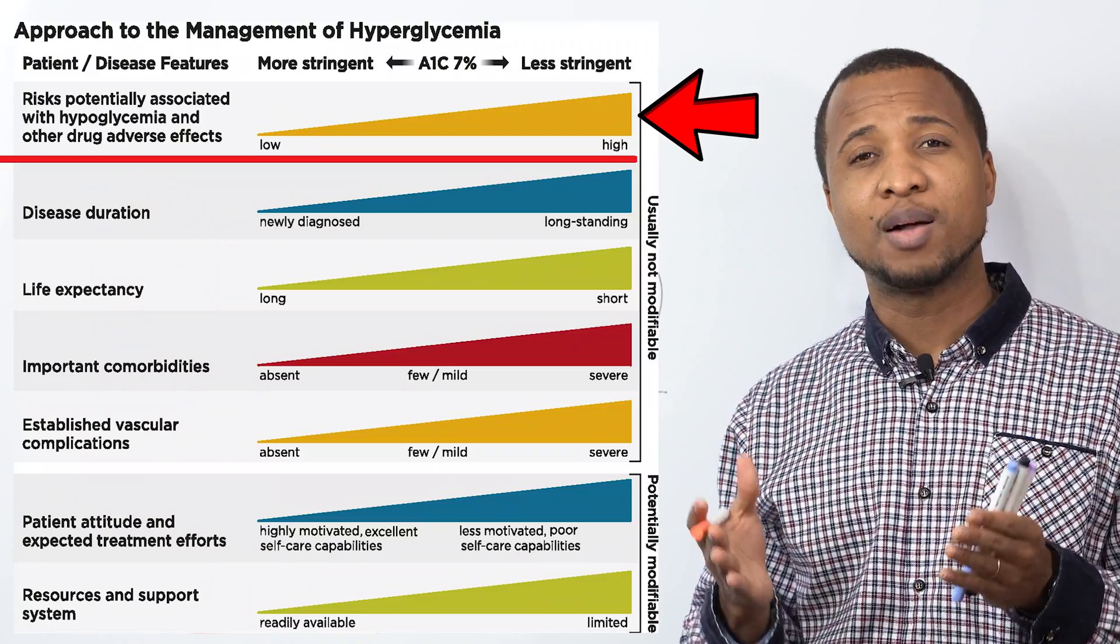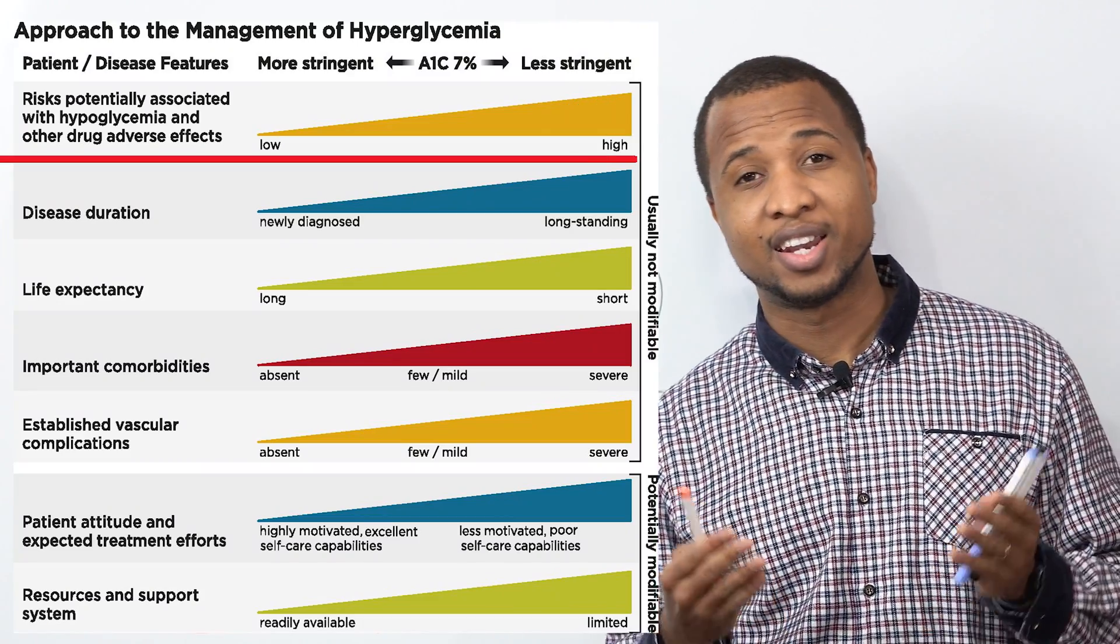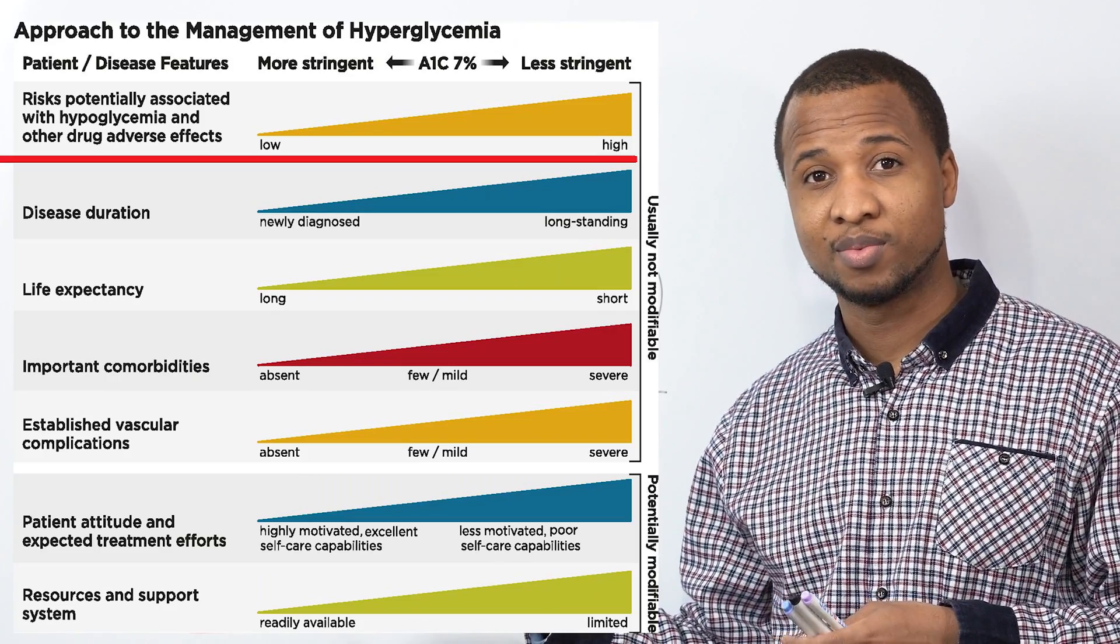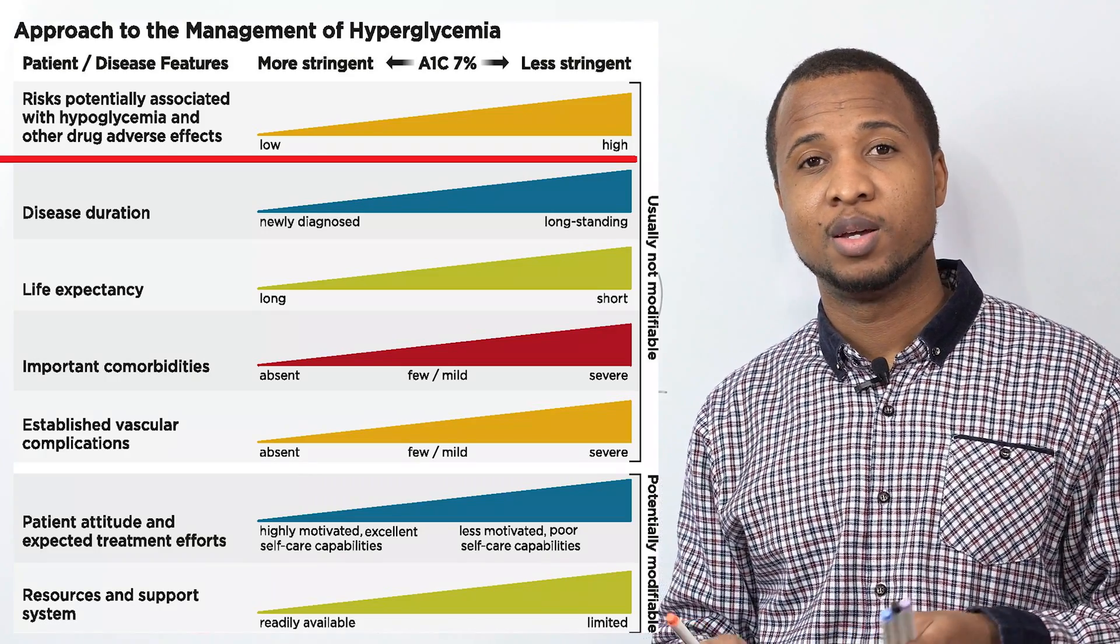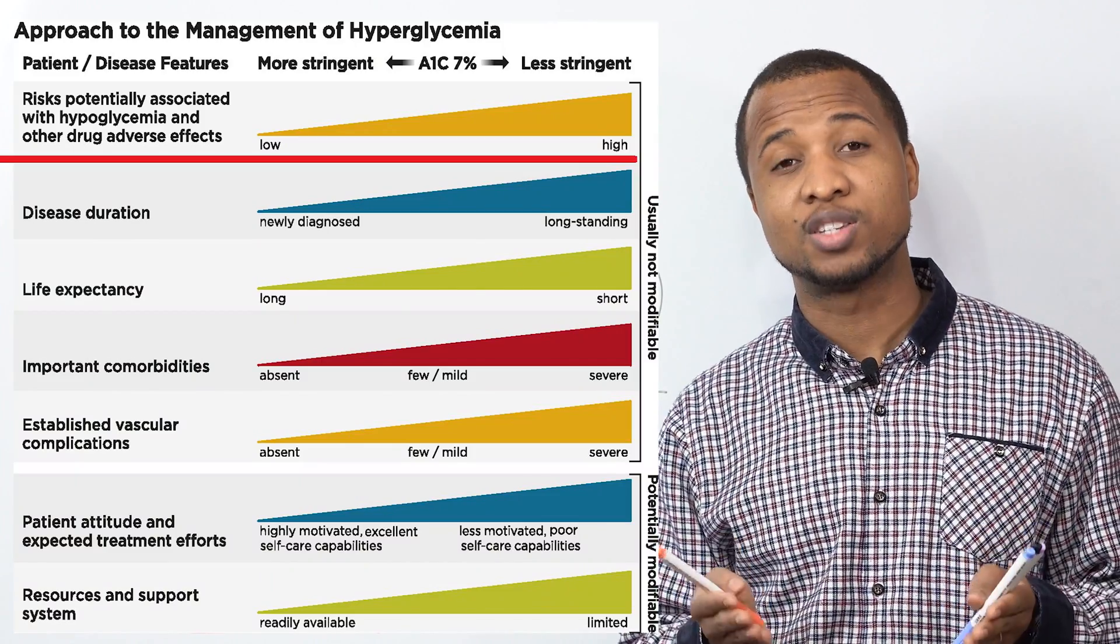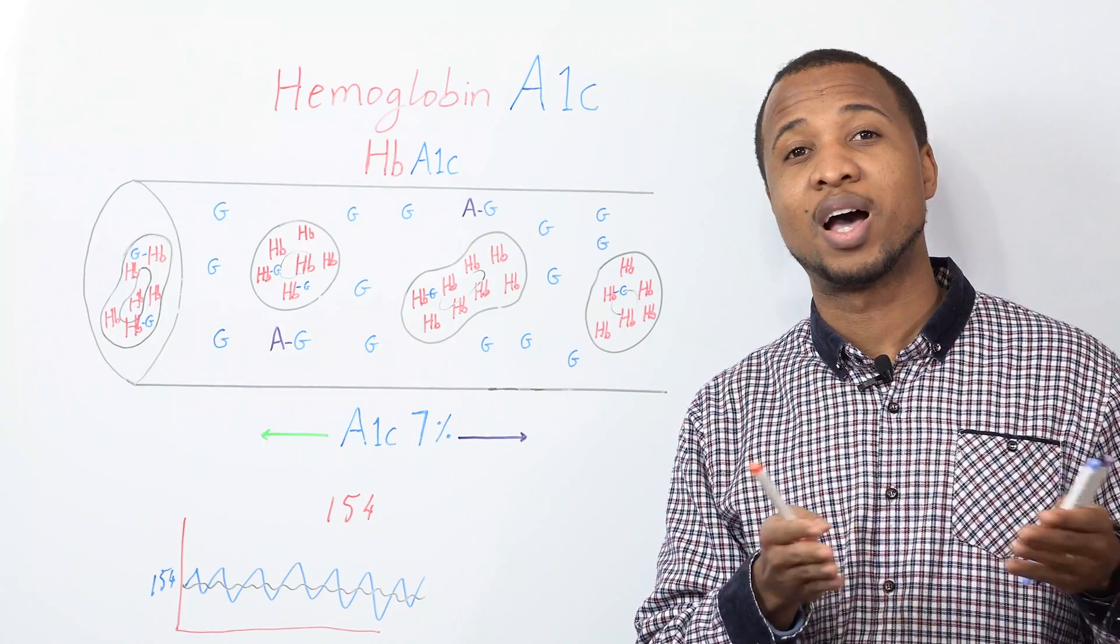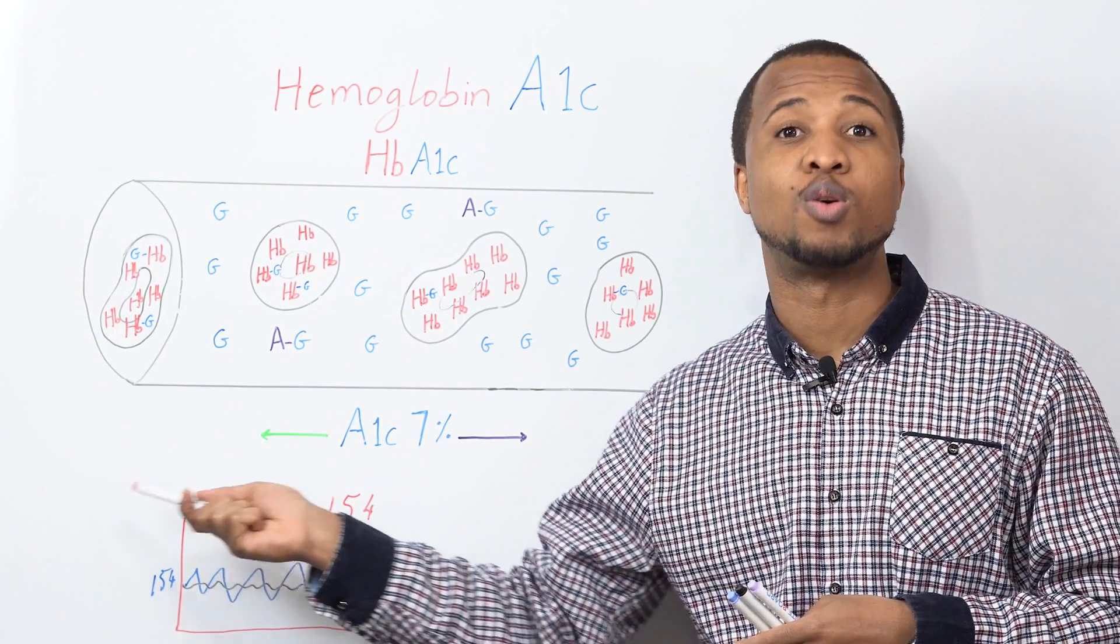For example, for those of you that are not taking medications, you're just using diet and exercise to lower your A1c. You can do it. You can lower it to normal. No problem. But if you're taking medications that can increase your risk of hypoglycemia or other complications, then you're not encouraged to go that way.